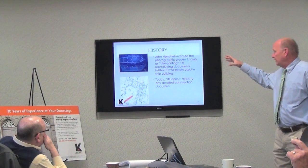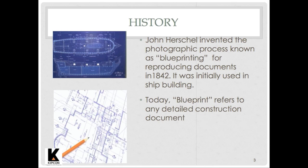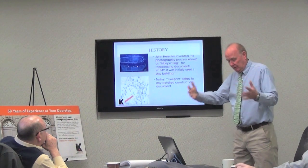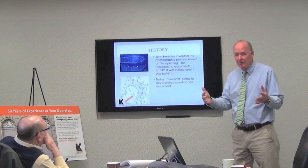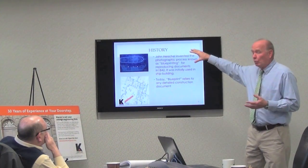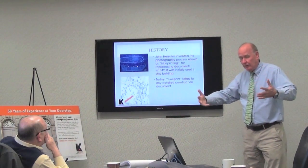John Herschel was the inventor of the photographic process known today as blueprint reading. He developed a chemical process of photographing the drawing, and when it was photographed, everything that had black lines came up white, and the background came up blue.